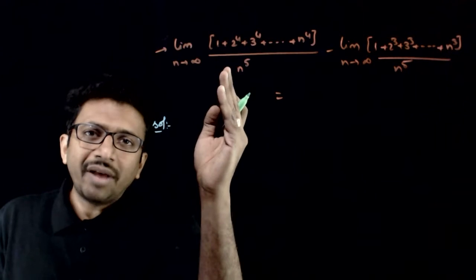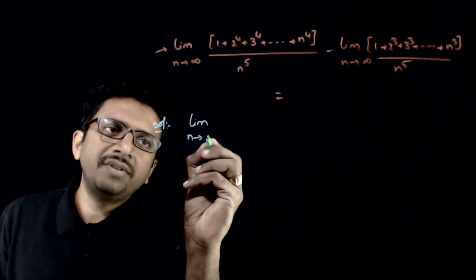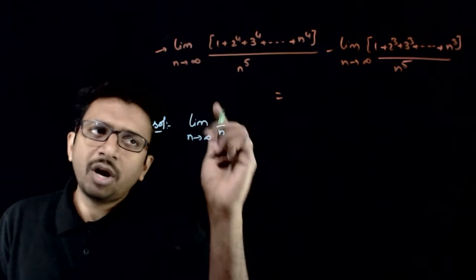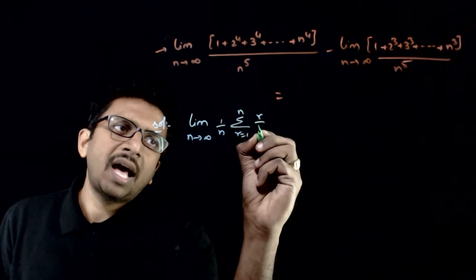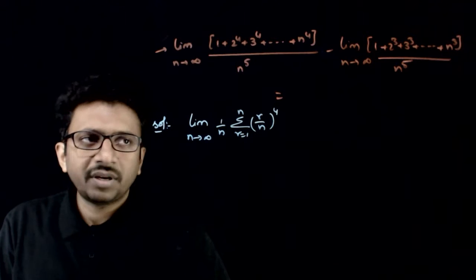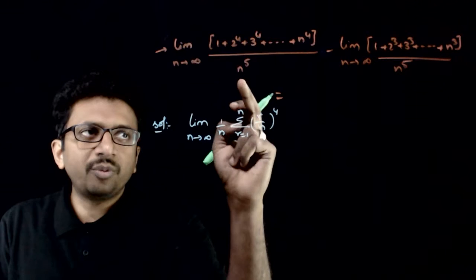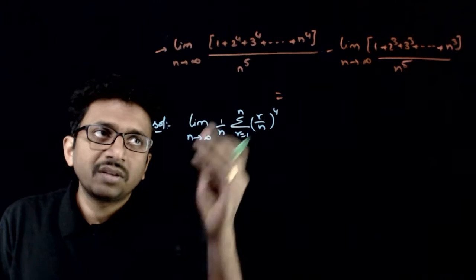Let us express this in sigma notation. This limit as n tends to infinity - if you take 1/n common - is sigma r equals 1 to n of (r/n)^4. That's 1^4/n^4, 2^4/n^4, 3^4/n^4, so (r/n)^4. If you take 1/n outside...